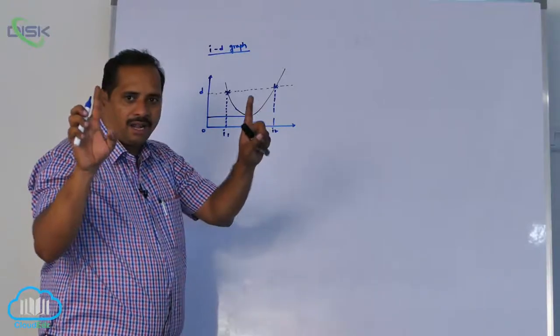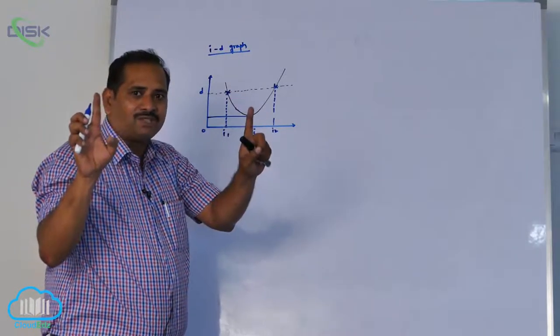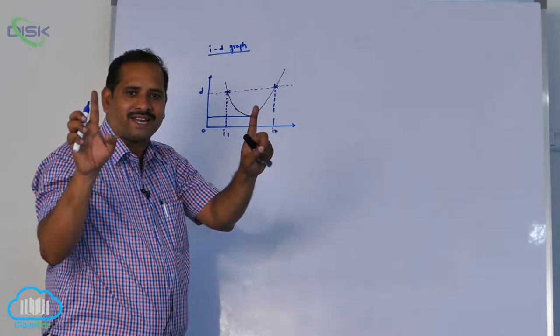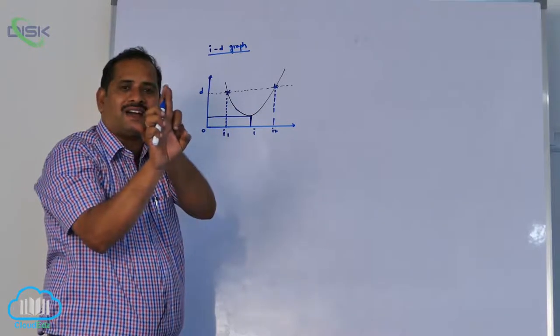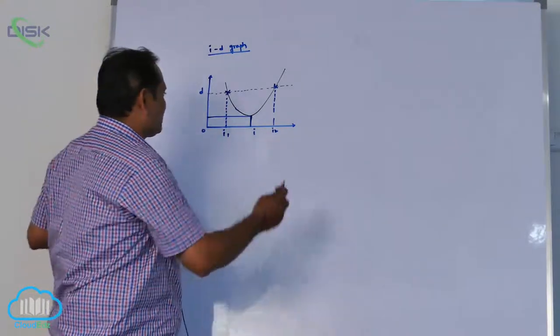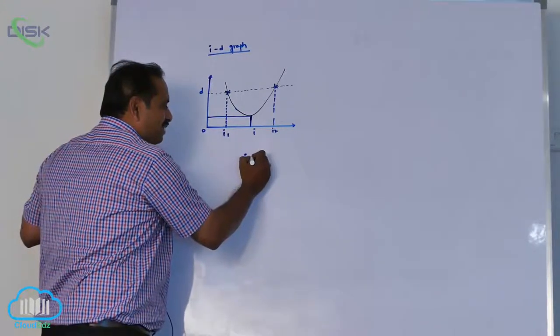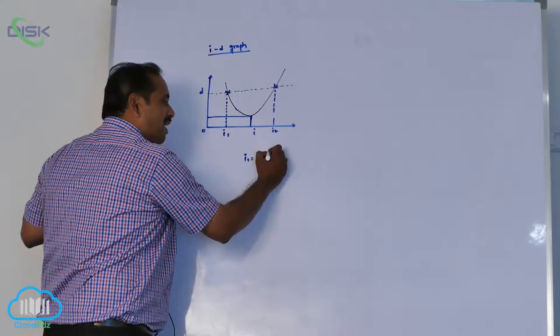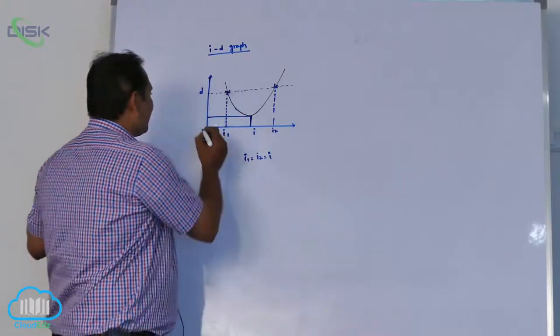For all intercepts I am having two angle of incidences, i1 and i2, that are coming closer. At minimum deviation, they coincide like this. That means i1 equal to i2 equal to i, only one condition, that is minimum deviation.